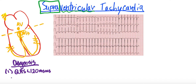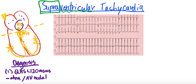It's narrow because these dysrhythmias arise from the atria or the AV node, and thus the depolarization through the ventricles is going to be normal. The QRS represents that depolarization through the ventricles, and thus the QRS is going to be narrow and quote-unquote normal.